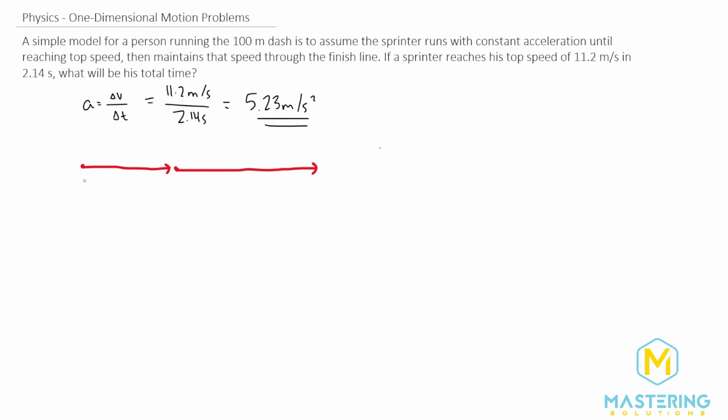and then from that point on, they're going at constant speed for the whole 100 meters. This is 100 meters total - an acceleration phase, then a constant velocity phase.